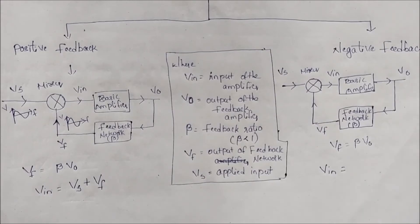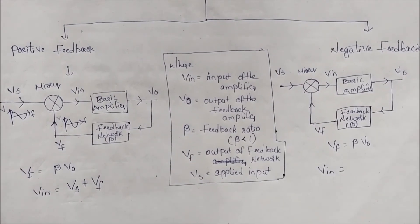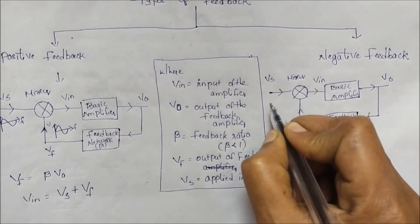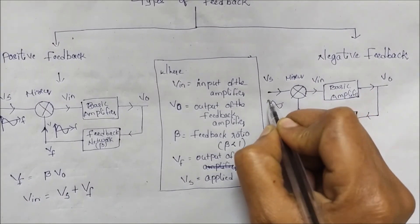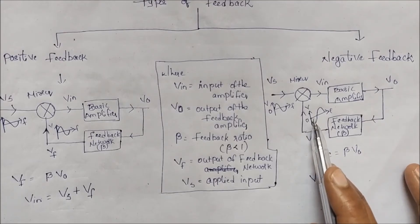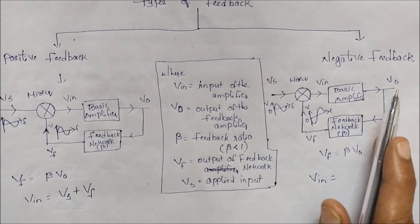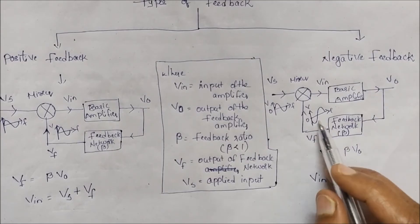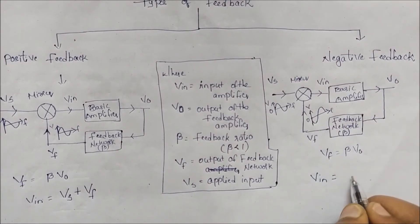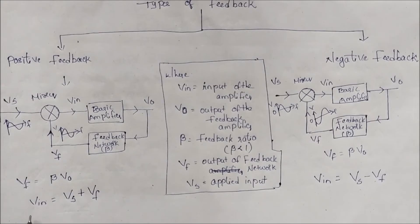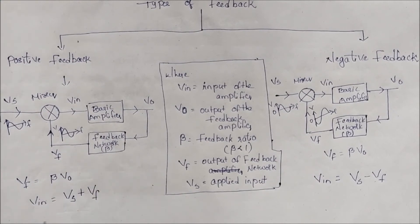Similarly, for negative feedback, the applied input signal and the feedback network signal are out of phase, so we subtract the two: Vs minus Vf. The net input voltage is the applied input voltage minus the feedback network voltage, and this net input is applied to the amplifier.